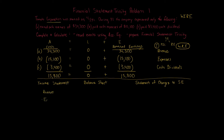The income statement formula is simple: revenues minus expenses equals net income if positive, or net loss if negative. Within revenues and expenses there can be many categories — sales revenue, interest revenue, salaries expense, cost of goods sold, depreciation, income tax, etc. Here we have one revenue and one expense, so we keep it simple: $34,300 minus $15,100 equals net income of $19,200.